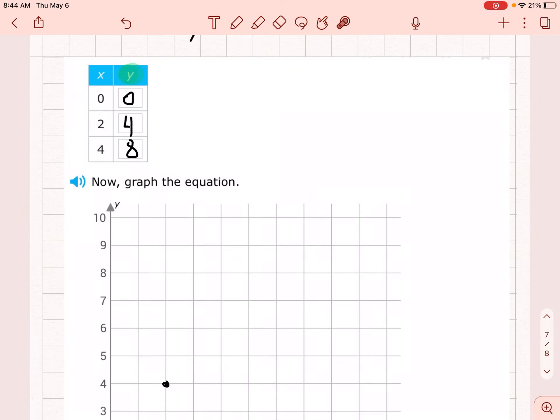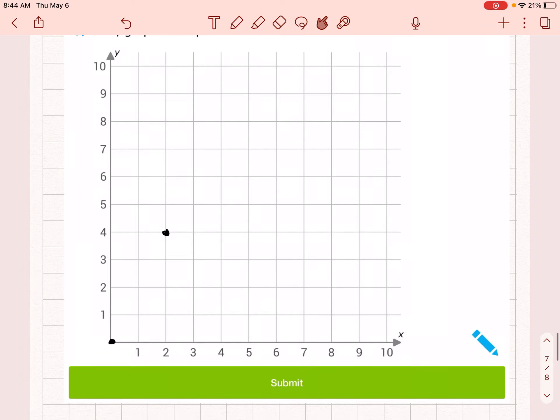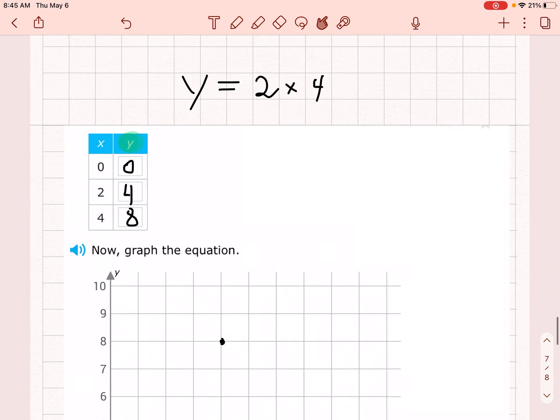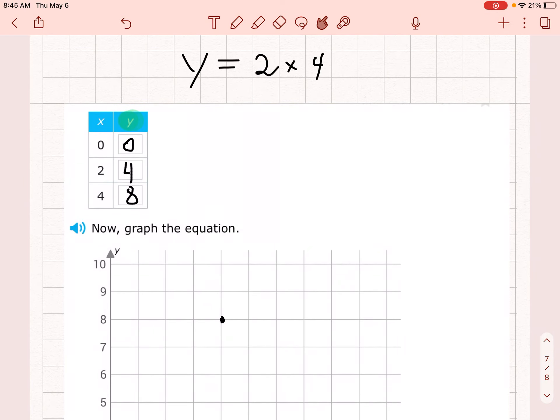When x is 4, y is 8. So I'm going to count over 4—1, 2, 3, 4—and y is 8 up here. Now I've graphed my points. Go ahead and work on this, let us know if you have any questions, and good luck with your work.